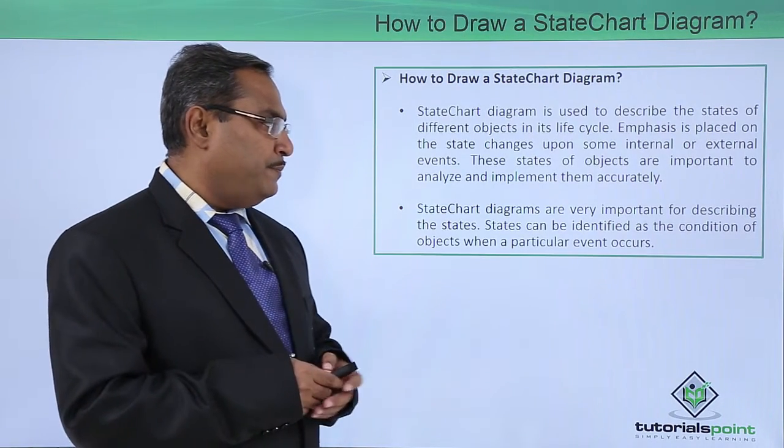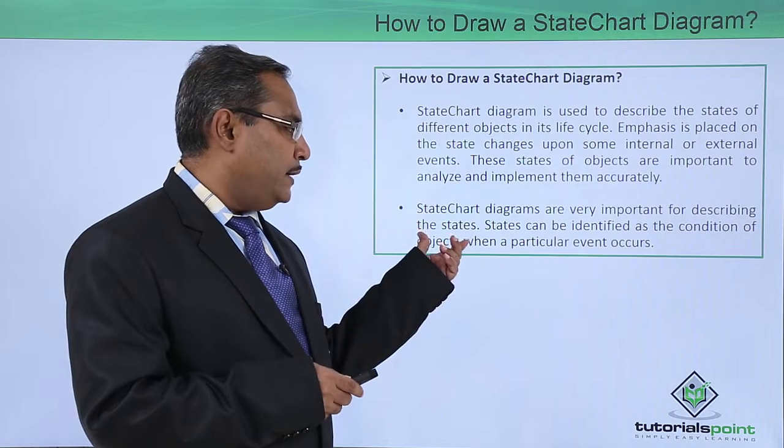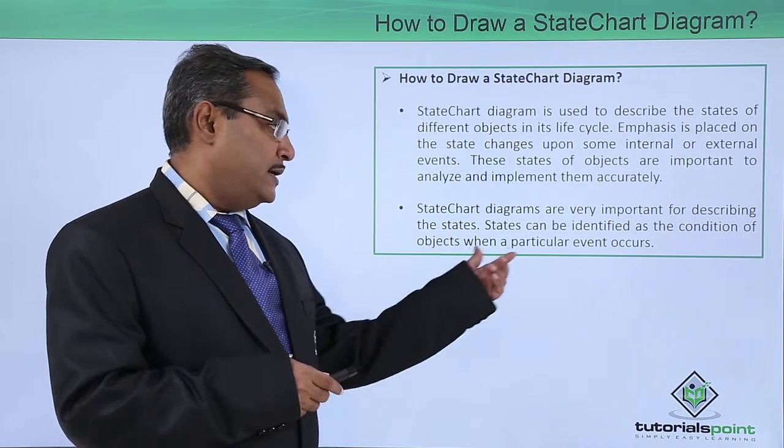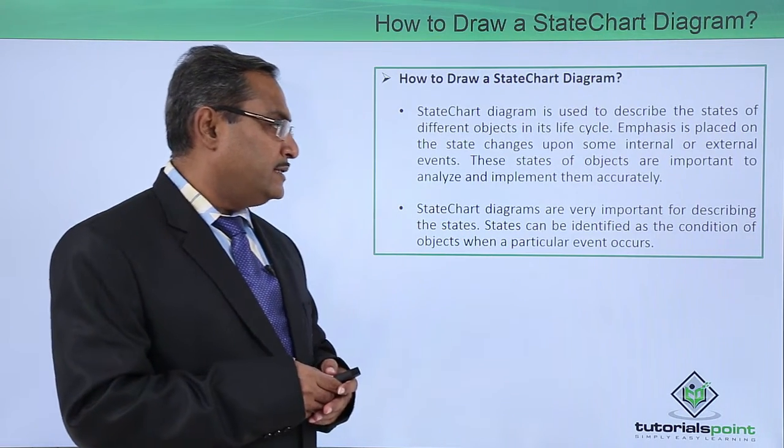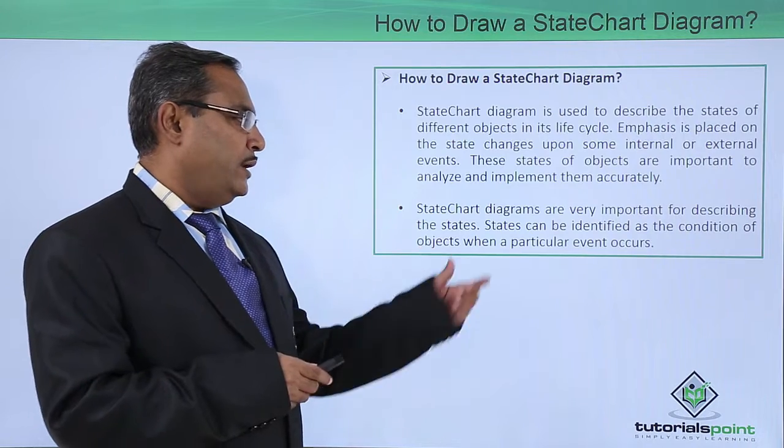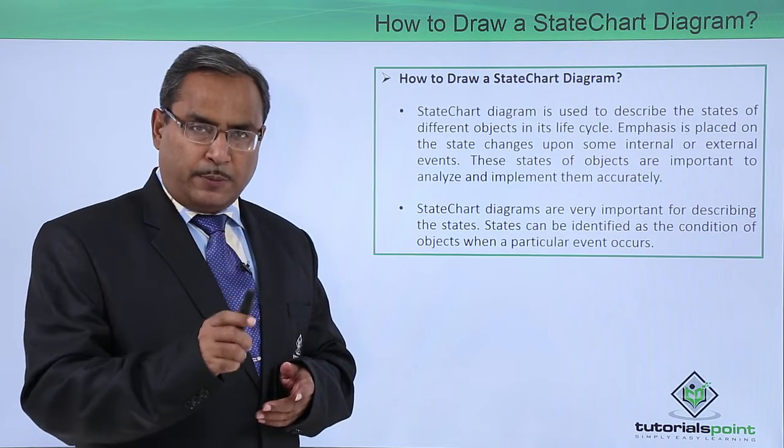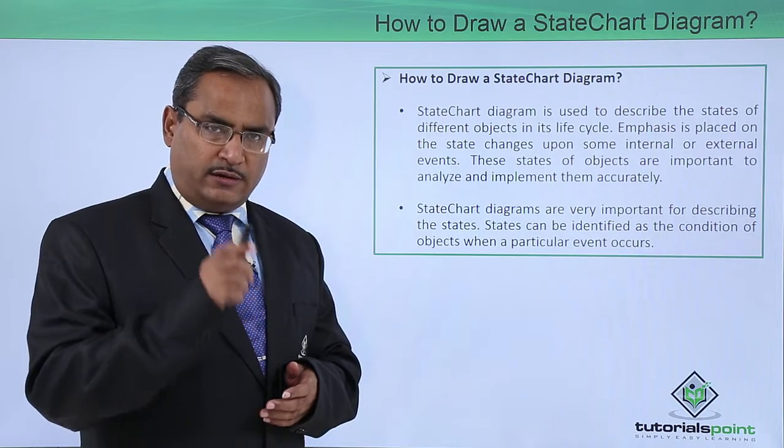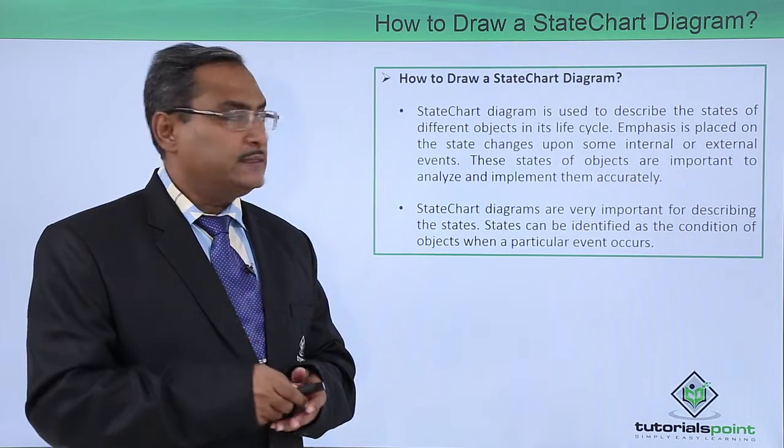State Chart Diagrams are very important for describing the system states. States can be identified as a condition of objects when a particular event occurs. So depending upon the event occurred, the state of an object will be decided.